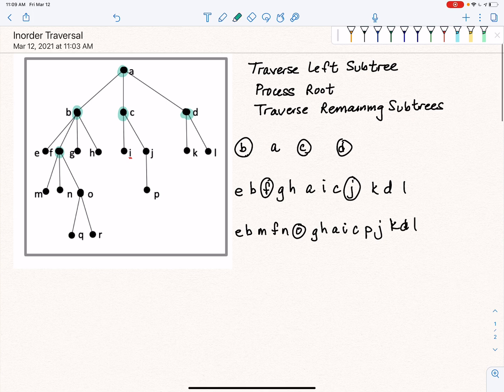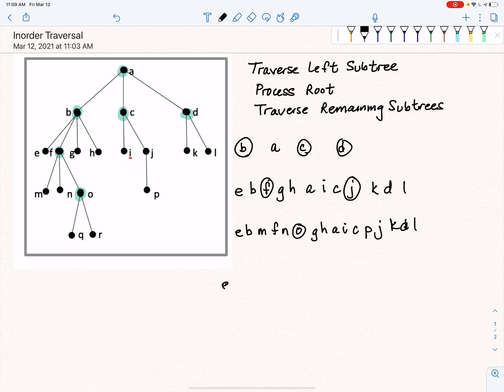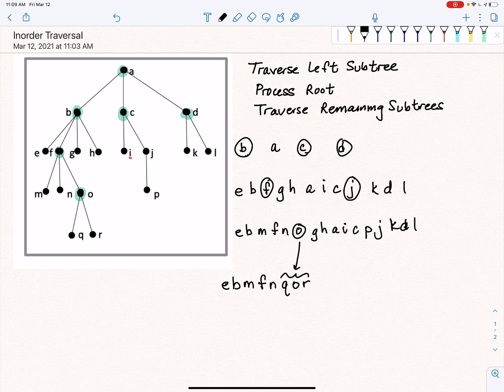So now we are at O. So everything before O gets written. Now, to process the O, we visit the left subtree, which is just a node. Then we process the root, which is O. Then we traverse the right, but that's really just a node. So just so you see what's happening here, this O became QOR. And then everything else stays the same.